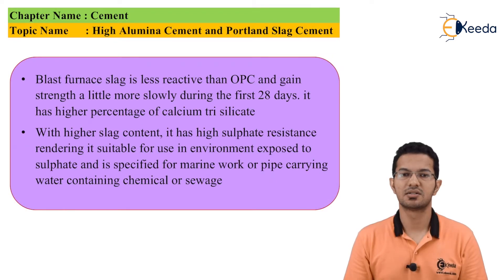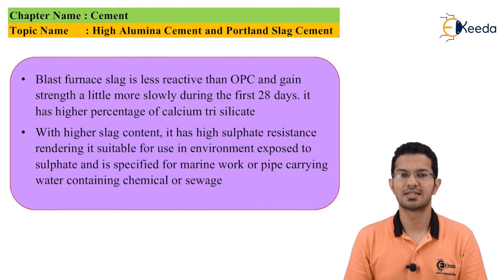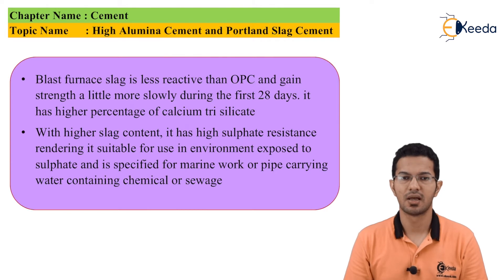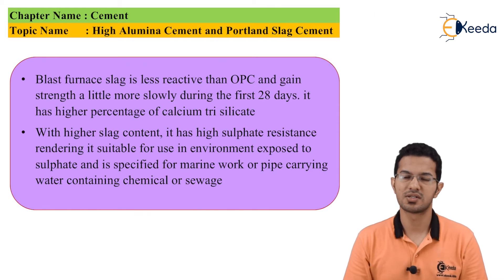The cement gains its strength slowly but the final product is very resistive to chemical attack. The blast furnace slag is less reactive than OPC and gains strength a little more slowly during the first 28 days. It has a higher percentage of calcium trisilicate. With higher slag content it has high sulphate resistance, making it suitable for use in environments exposed to sulphate and specified for marine work or pipes carrying water containing chemicals or sewage.